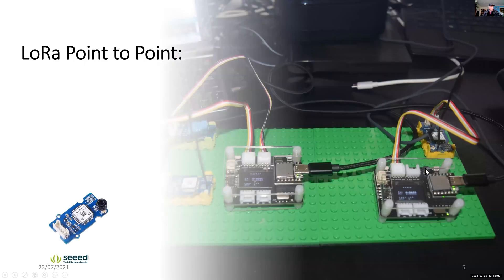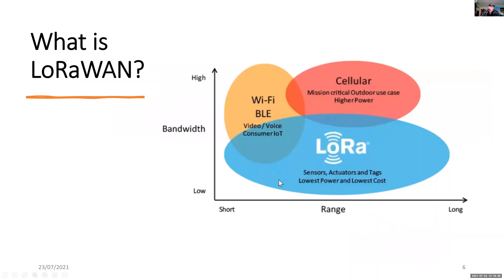But before I look at the internet and the LoRaWAN gateways, I'm going to have a look at point-to-point communications that don't use the gateway. Here I'm going to use a master and a slave to communicate. But before I do that, we'll explore a little bit about LoRaWAN radio.